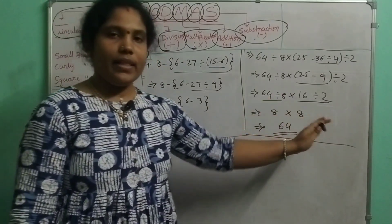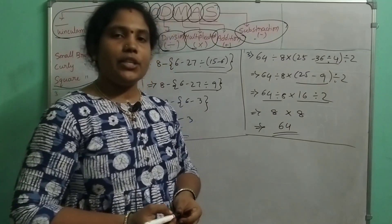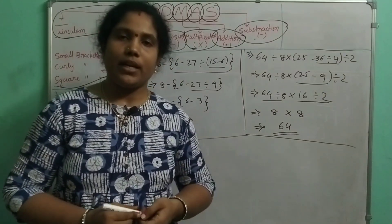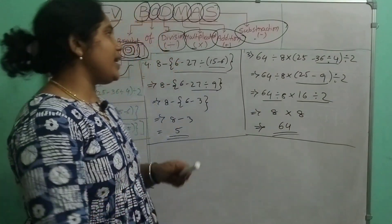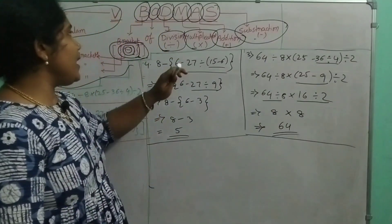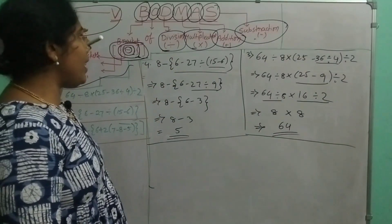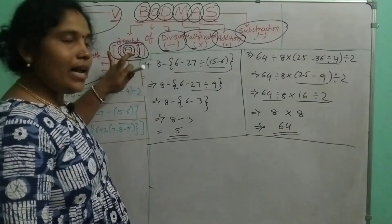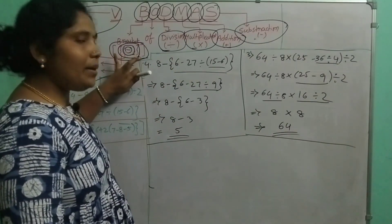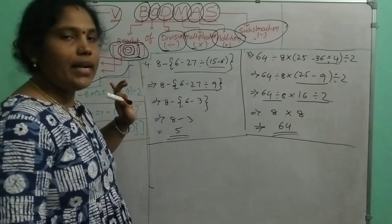So remember, we do Bracket, Division, Multiplication, Addition, Subtraction — in that order. We work through small brackets, then curly brackets, then square brackets.